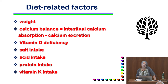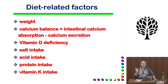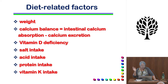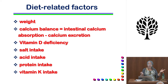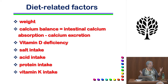Now let's talk about diet factors. I'm going to cover weight, calcium balance, vitamin D deficiency, and net diet acid intake — meaning how much acid you take in versus how much base. Acids include things like table salt, so we'll talk about salt intake. Acids also include phosphates and sulfates found in proteins, so we'll talk about protein intake. And finally, we'll talk about vitamin K.